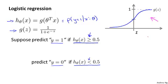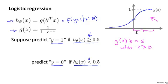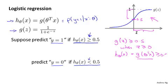If we look at this plot of the sigmoid function, we'll notice that g of z is greater than or equal to 0.5 whenever z is greater than or equal to 0. So it's in this half of the figure that g takes on values that are 0.5 and higher. When z is positive, the sigmoid function g of z is greater than or equal to 0.5. Since the hypothesis for logistic regression is h of x equals g of theta transpose x, this is therefore going to be greater than or equal to 0.5 whenever theta transpose x is greater than or equal to 0.